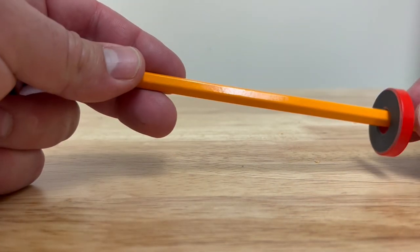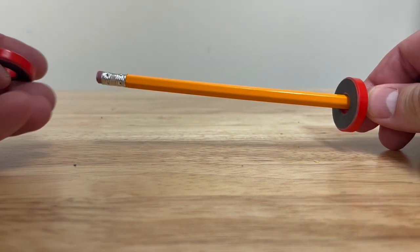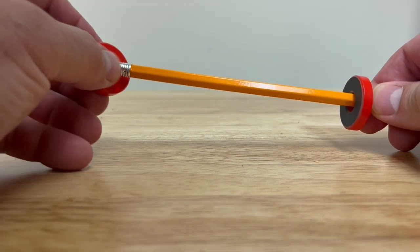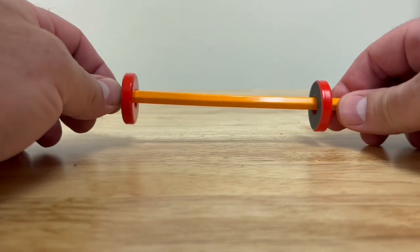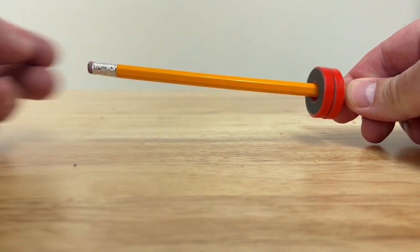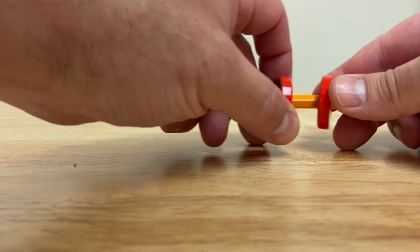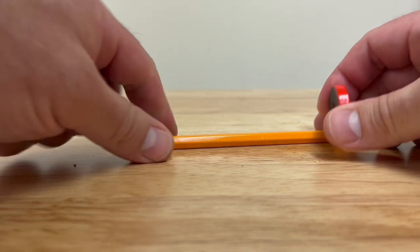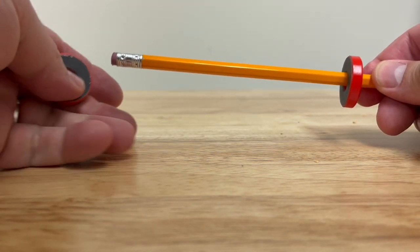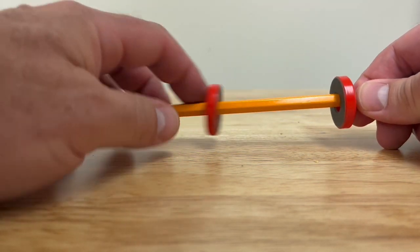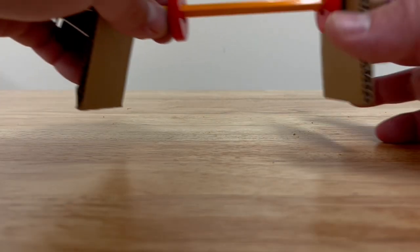So we could maybe put these ring magnets on a rod, whether it's a pencil or a dowel, and then push them across in a controlled environment where they're not necessarily going to fall off of the table. We could even build an entire system.